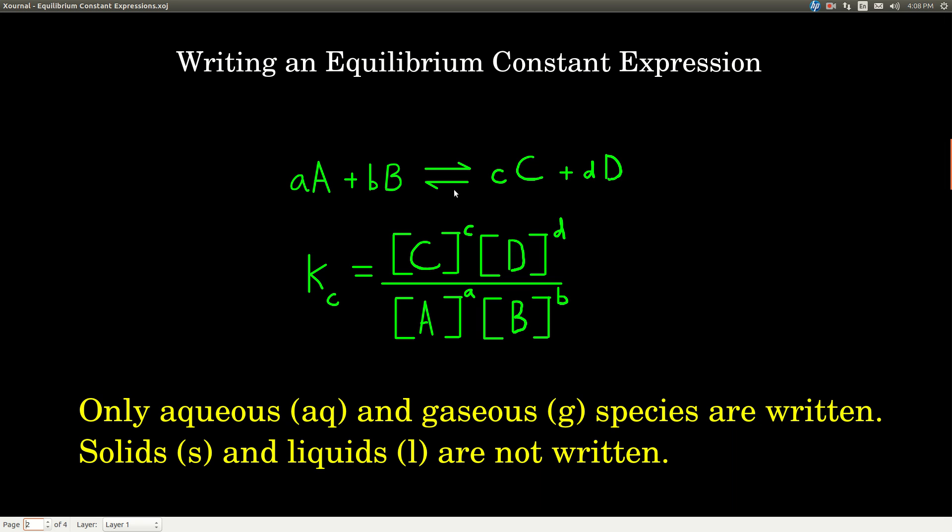This is why we have the double arrows going forward and backwards. And here, the lowercase letters, the little a, little b, little c, and little d, those are the coefficients, the numbers in front of the formulas. And the capital letters are the compounds, the formulas: capital A, capital B, capital C, and capital D.